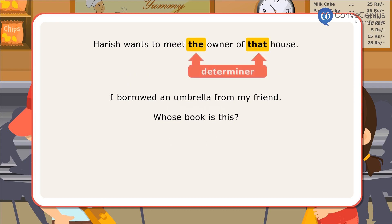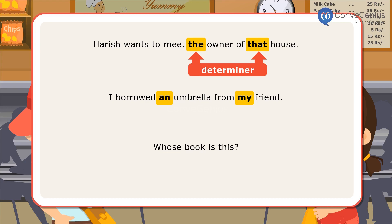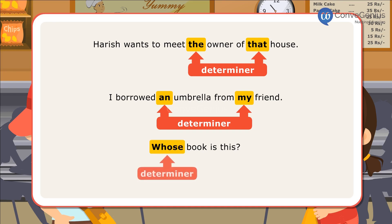In the first sentence, 'the' and 'that' are determiners, since they specify a particular person and point out a particular house. In the next sentence, 'an' and 'my' are determiners, since they give some information about the thing borrowed and also tell from whom it was specifically borrowed. In the third sentence, 'whose' is a determiner, since it precedes a noun and asks something specifically about it.